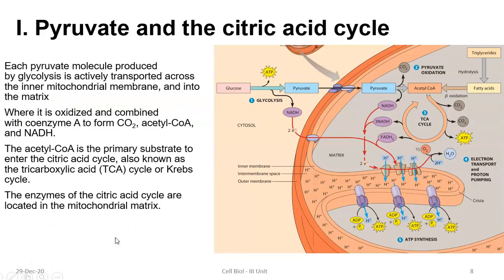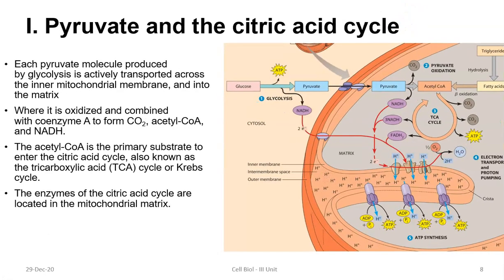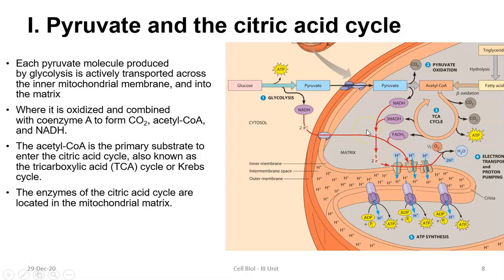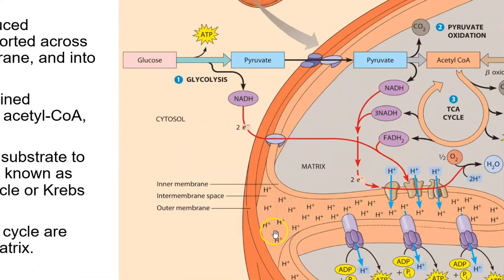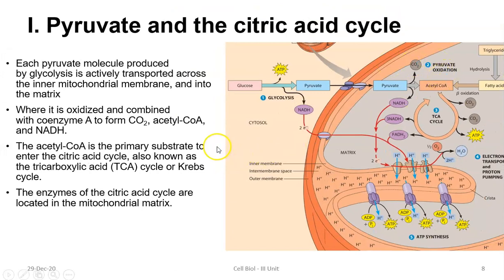The next function of mitochondria is pyruvate oxidation as well as citric acid cycle functioning. Each pyruvate molecule produced by glycolysis is actively transported across the inner mitochondrial membrane, as shown here. There it is oxidized to acetyl-CoA — combined with coenzyme-A to form carbon dioxide, acetyl-CoA molecules, and reduced equivalents.